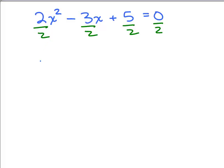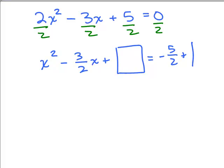So that gives me x squared minus 3 halves x. And then we're going to add something to both sides. I'm going to go ahead and use a box this time. Equals, and on the other side we're going to have a negative 5 halves plus whatever we add to the left side of the equation, we'll have to add to the right side of the equation. All right, so what would go in here?